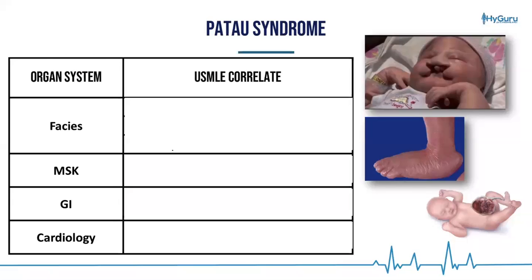Patau syndrome is trisomy — go ahead and put that in the chat. Trisomy what number? If you're saying 13, you're absolutely correct.